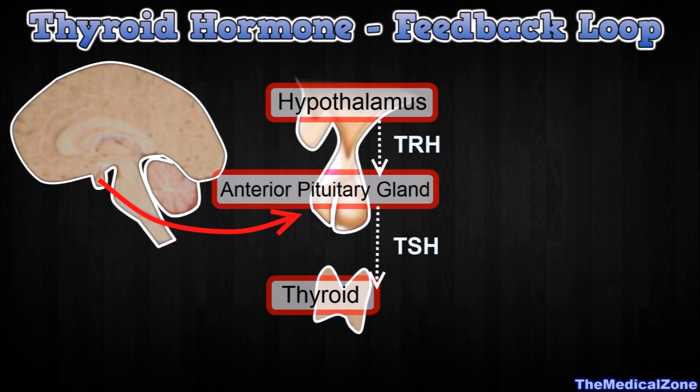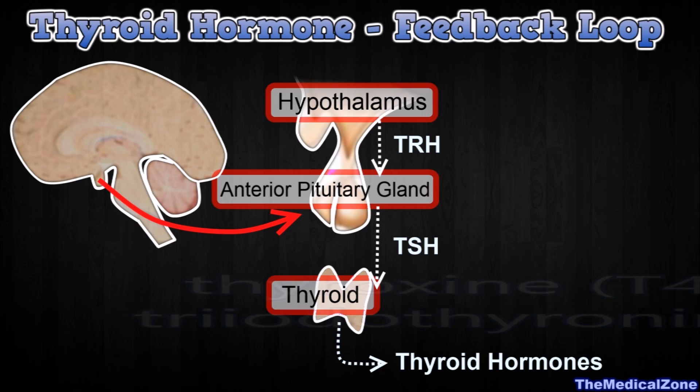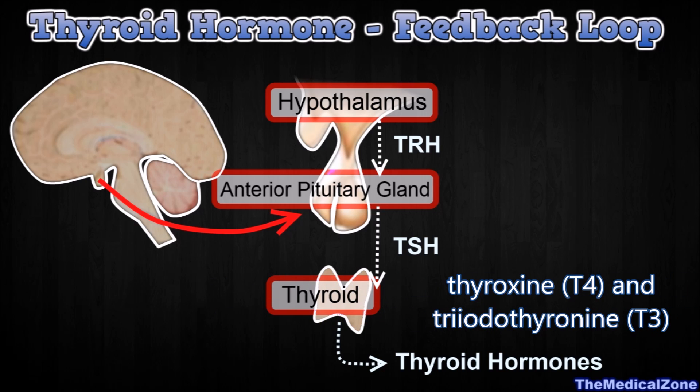The TSH, the Thyroid-Stimulating Hormone, then stimulates the production of the thyroid hormones, thyroxine and triiodothyronine, by the thyroid gland.